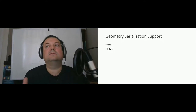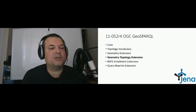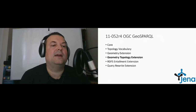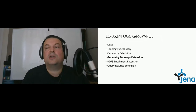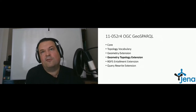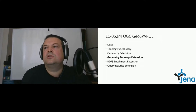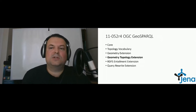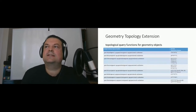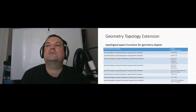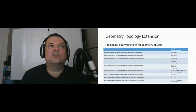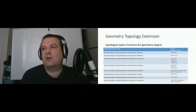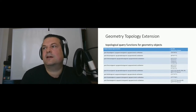We now have the geometry extension. We can also apply the geometry topology extension to these — a vocabulary that applies to geometric features. I'm mentioning some functions here for the Simple Features. These are the functions we can now use on geometry features, and we can apply them to all types of geometry features such as points, literals, polygons, and so on.